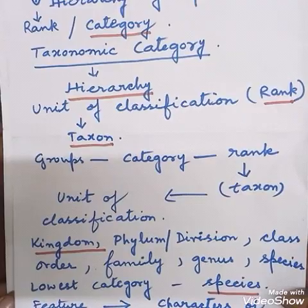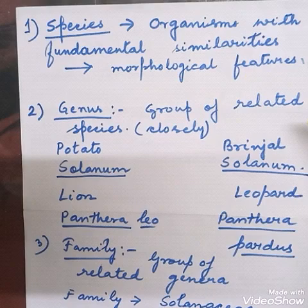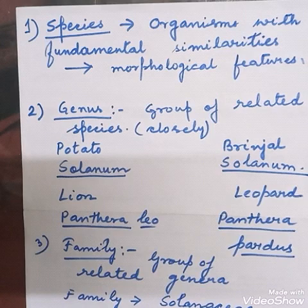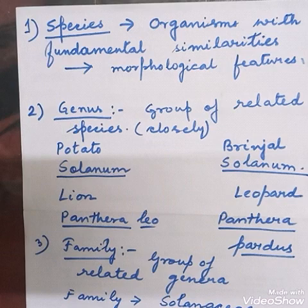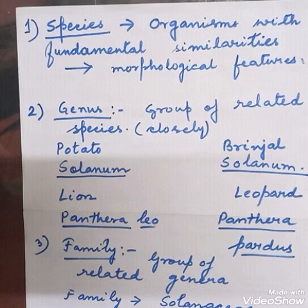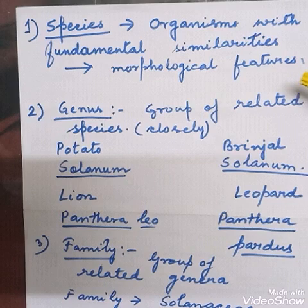Starting from the lowest category — species. Species are a group of organisms with similar characteristic features. Morphological features, that is external features, are used to group organisms. Organisms with fundamental similarities are called species. Species is the lowest taxonomic category. One species is distinguished from another by seeing the morphological differences — their external features.